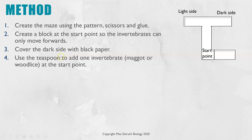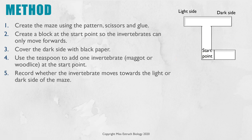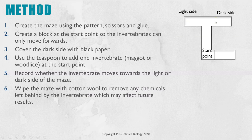Use a teaspoon to carefully add one invertebrate into the start point. Observe and record which side they move to — do they go to the light or the dark side? Then remove that invertebrate and wipe the maze clean. The reason you need to do that is they'll leave slight traces of chemicals where they have moved, and future invertebrates can detect that and it will influence their decision. We want to make sure it's only the light or dark variable having any impact.